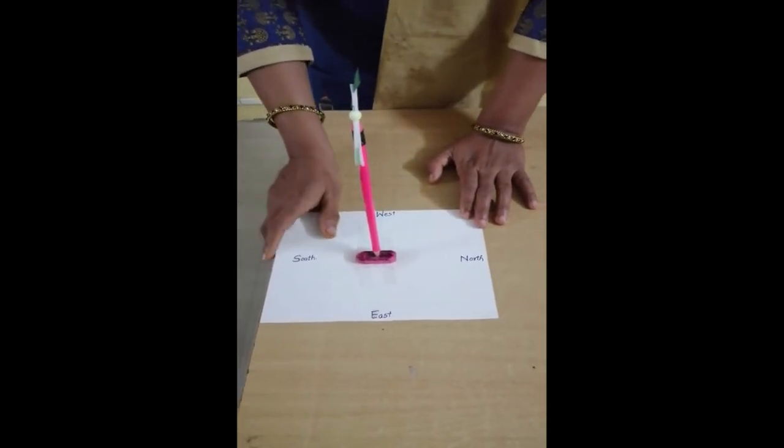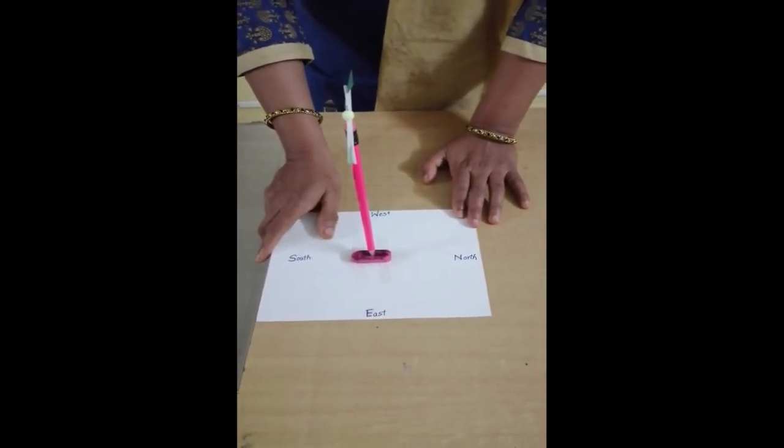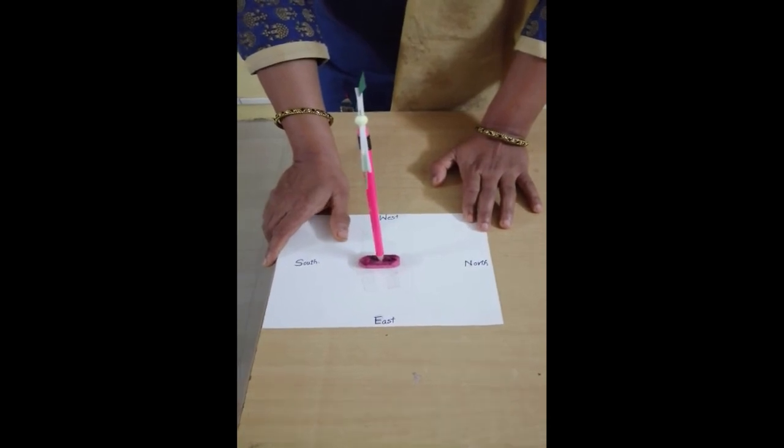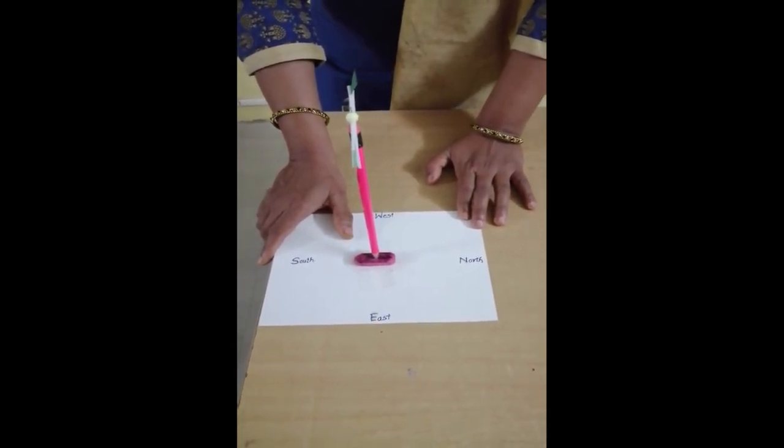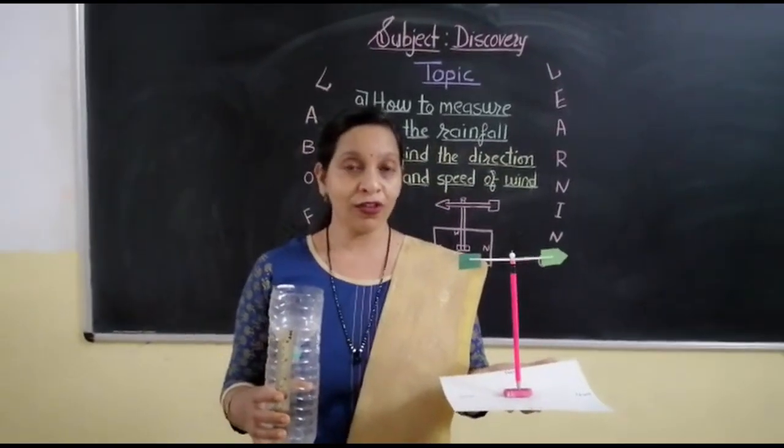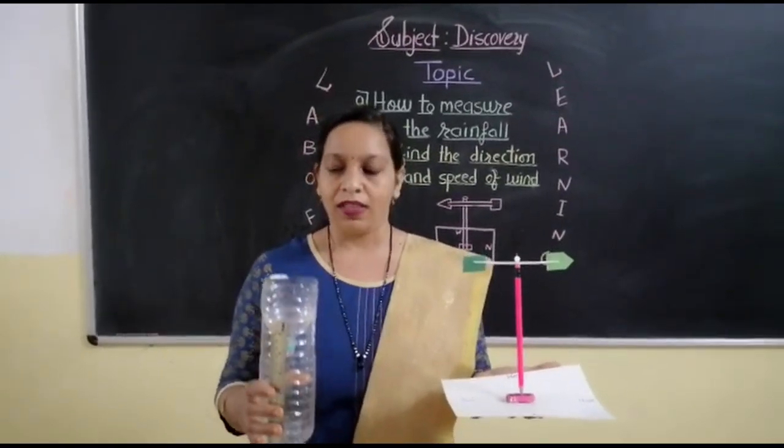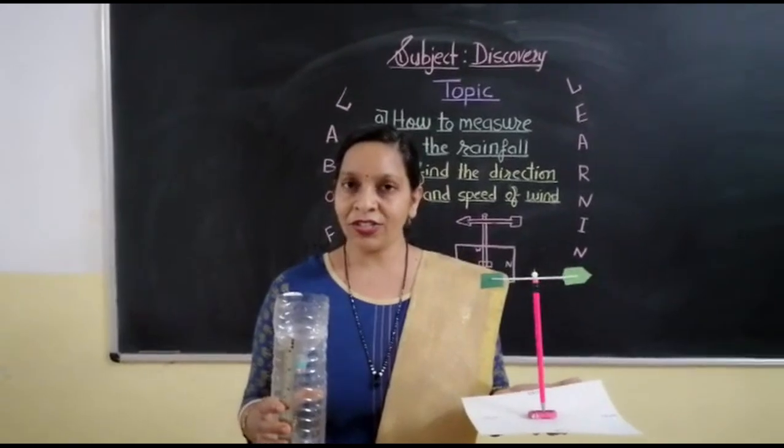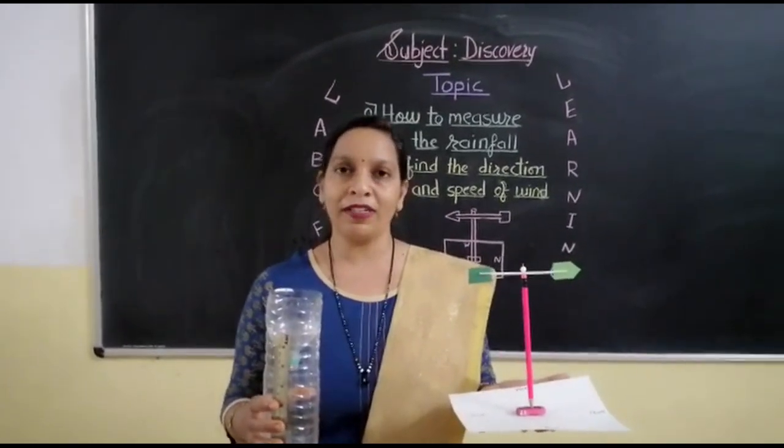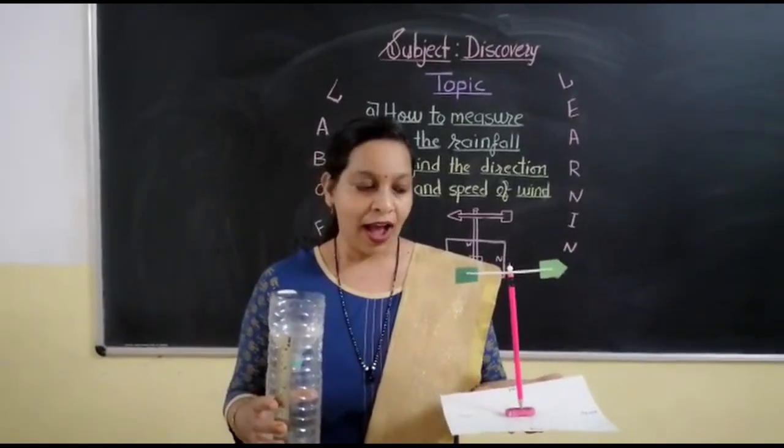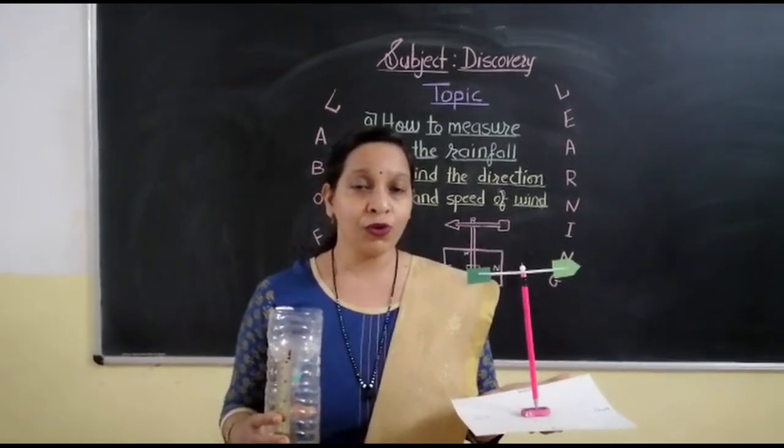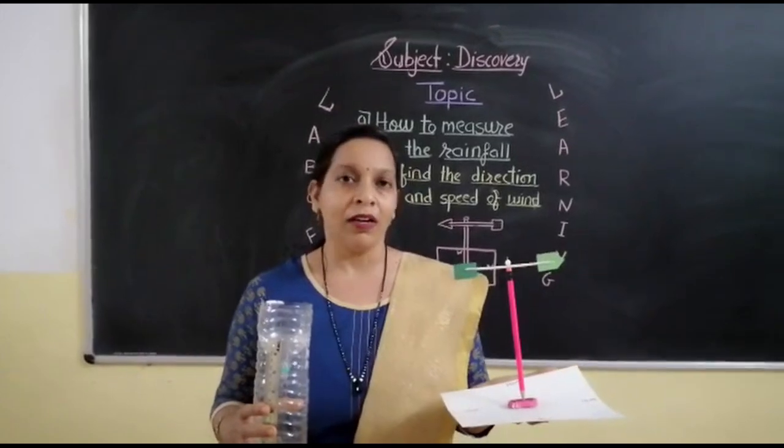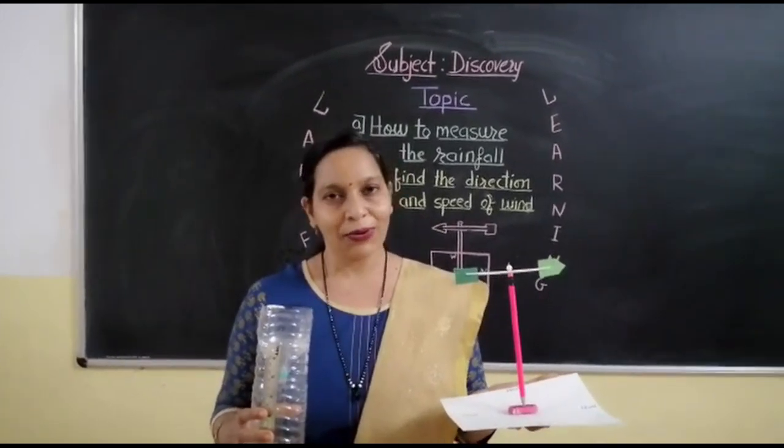So, hope you have enjoyed the activity and you have understood how it can be prepared. Both the instruments are ready, children. This is a rain gauge which we are using for measuring the rain, and this is the wind vane, which is used to find out the direction and the speed of the wind. Thank you.